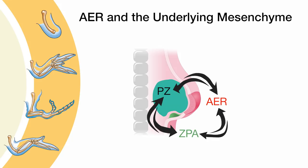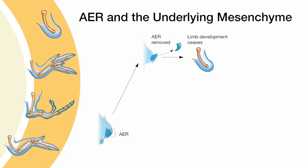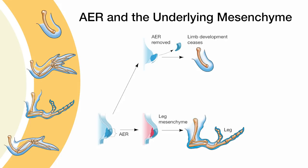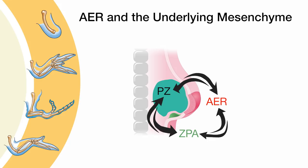You just saw what the ZPA was capable of. If you remove the AER from the limb bud, it will cease to develop in a stage-dependent manner. If you replace the underlying mesenchyme of the forelimb bud with hind limb derived mesenchyme, then a leg will form instead of an arm. These results suggest that the AER is necessary for limb outgrowth and the progress zone is necessary for proper limb type specification. Each of these limb bud domains are molecularly interacting with each other in a positive manner to drive the induction and sustained outgrowth of the limb bud.